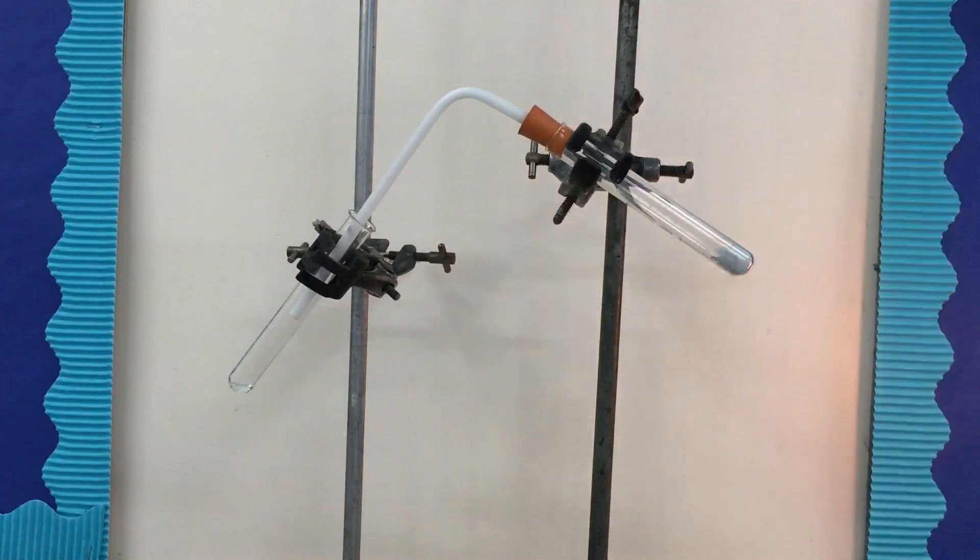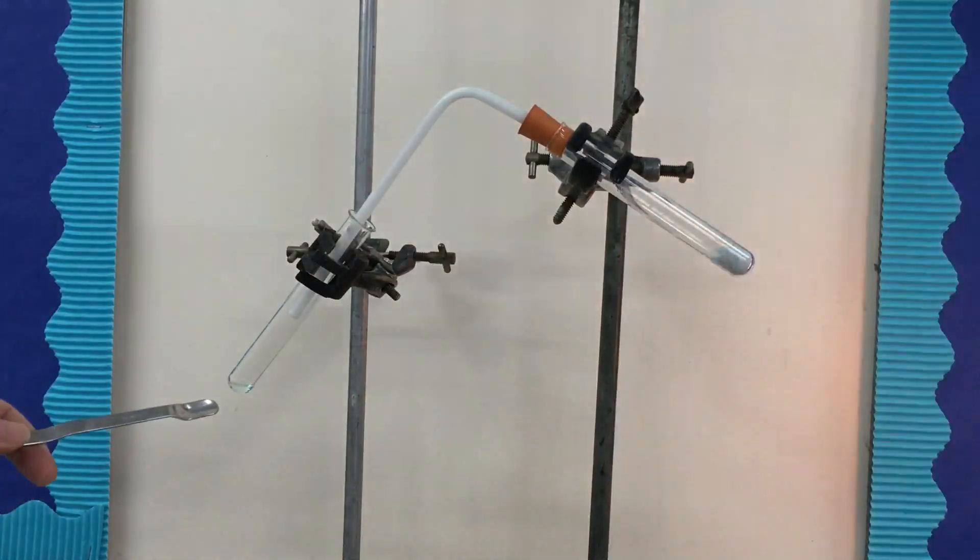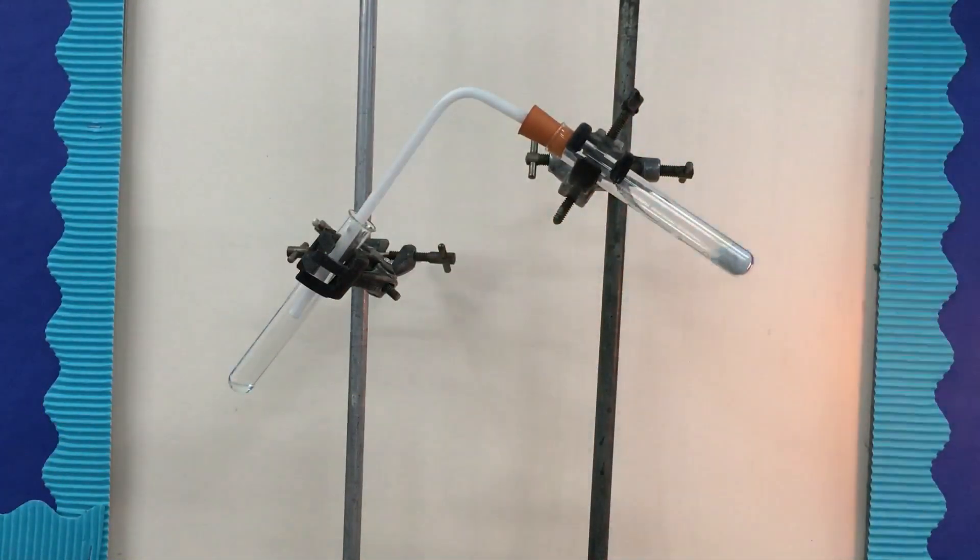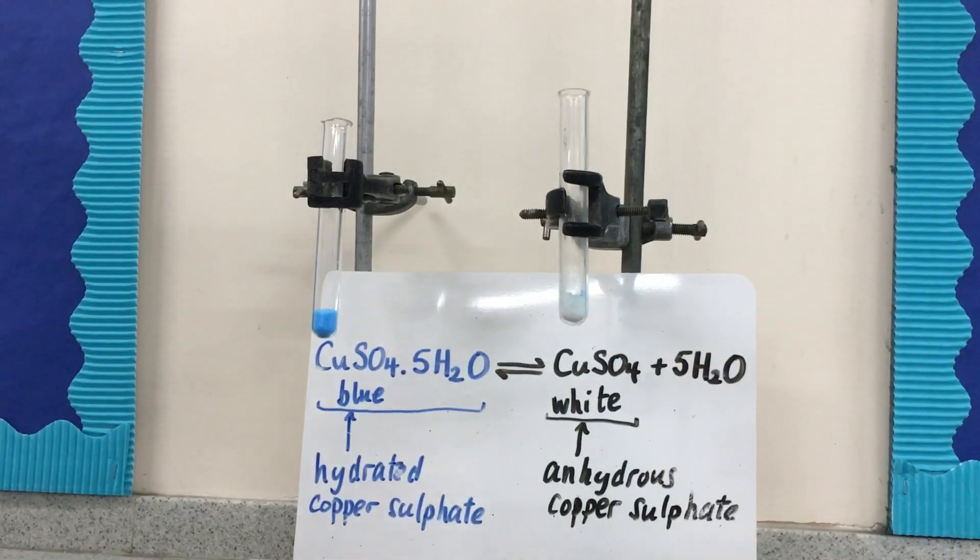We've heated the originally blue hydrated copper sulfate, CuSO4·5H2O, and it's become the white anhydrous copper sulfate, and water which we've collected in that tube there.